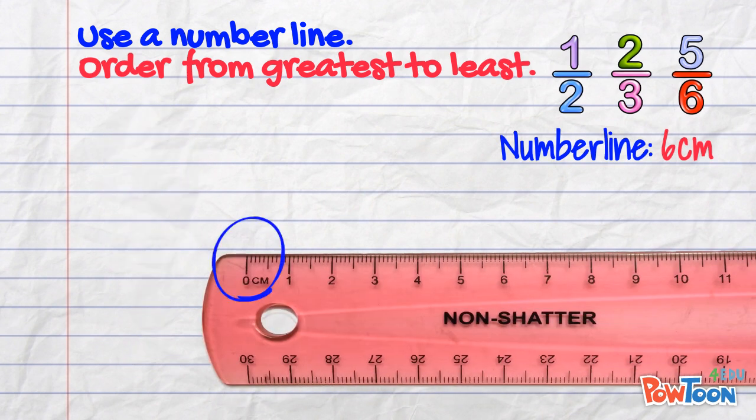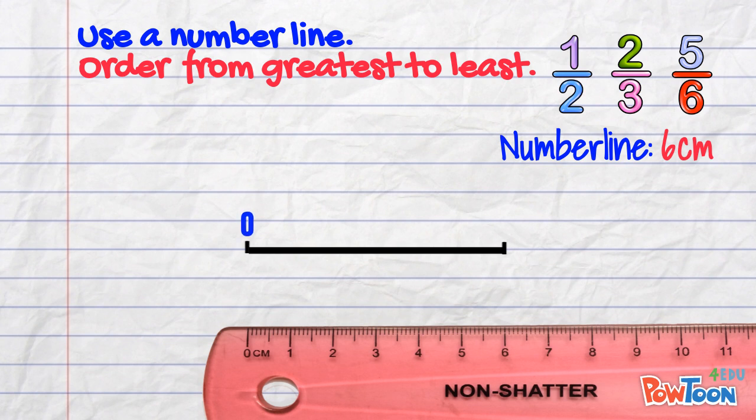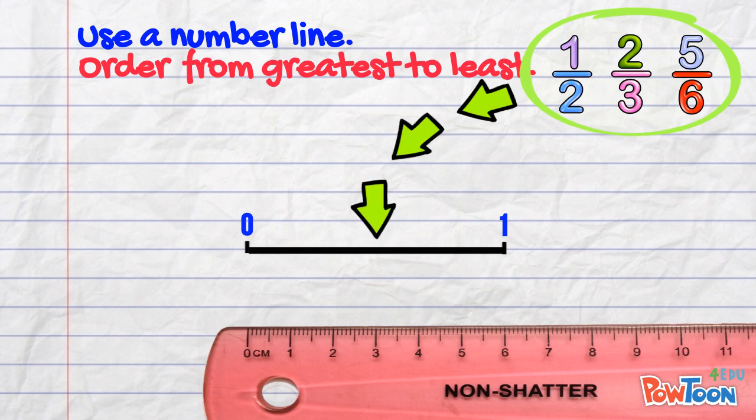I measure exactly 6cm for my number line. I mark 0 at the left side and 1 at the right side. My fractions will fit between these two points.